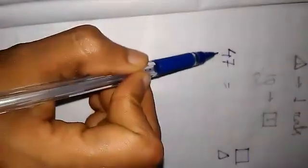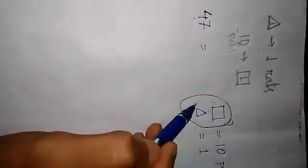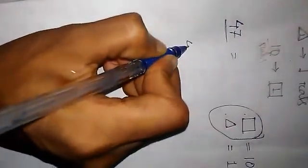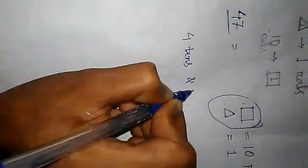I want to show number 47 using these shapes. 47 is equal to 4 tens and 7 ones. Square is equal to 10 points and triangle is equal to 1 point.